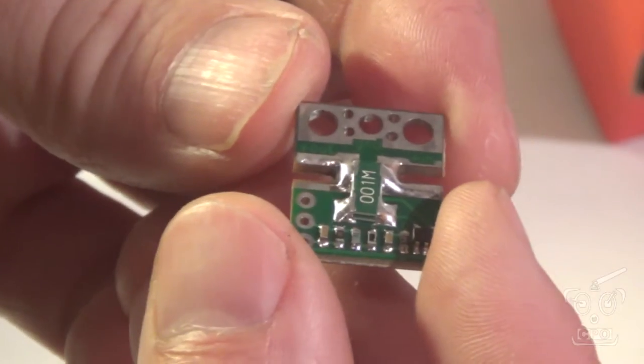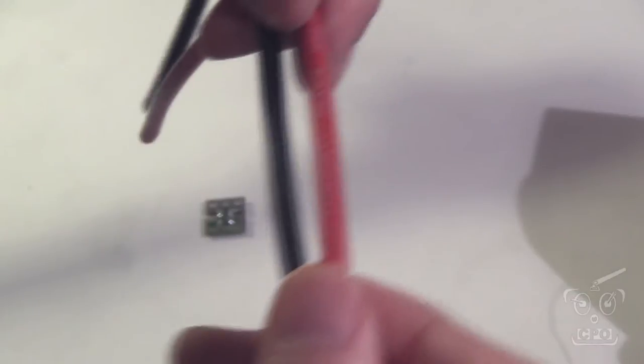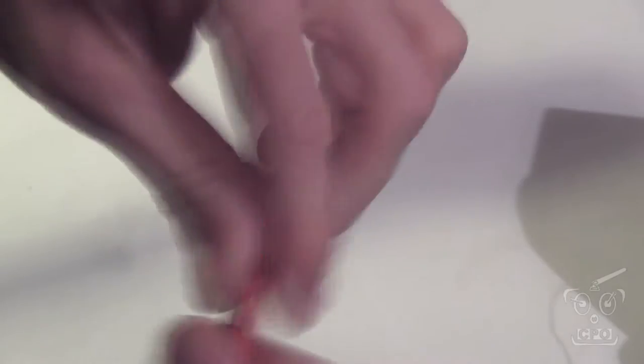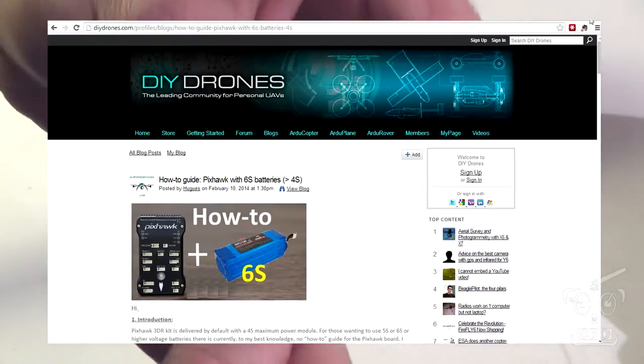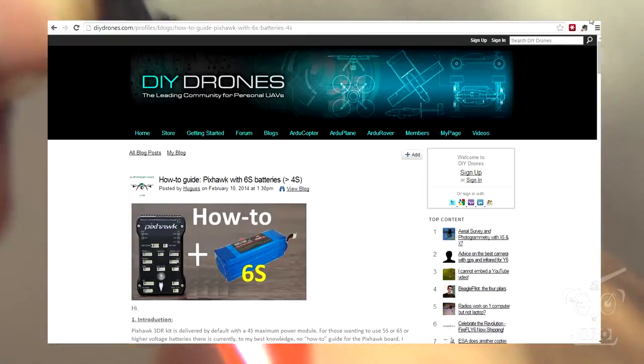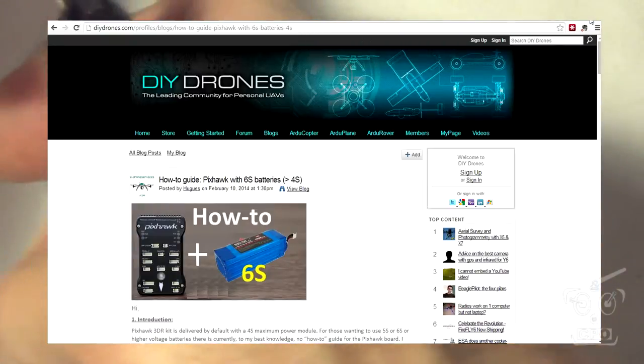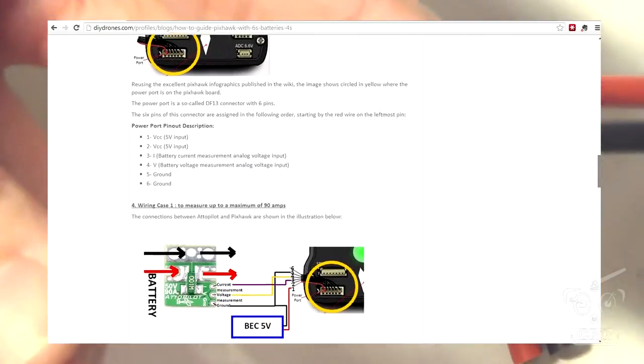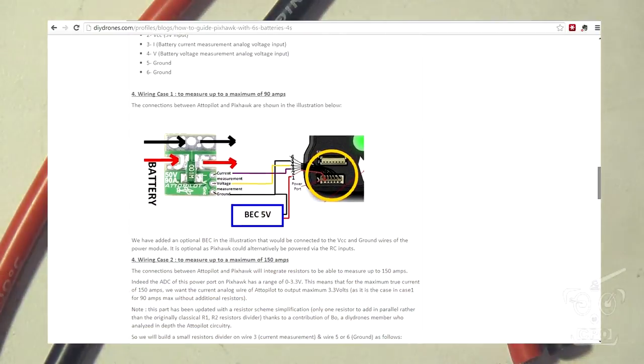and I just wanted something a little bit more beefy, probably not necessarily required, but I figured what the heck. So I saw some great instructions on this. There's some instructions with regard to using one of these sensors for 6S power with the APM. Similar instructions. I'm still using a 4S,